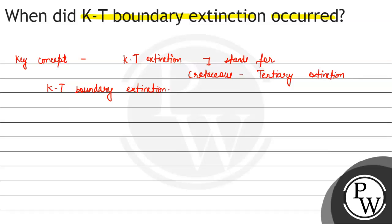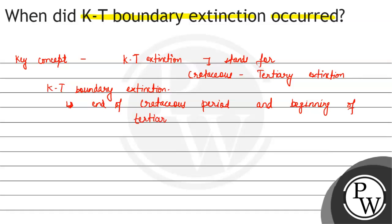Now, why do we say KT boundary? Because this happened at the end of the Cretaceous period and the beginning of the Tertiary period. These two periods represent one boundary, which is why we say KT boundary.